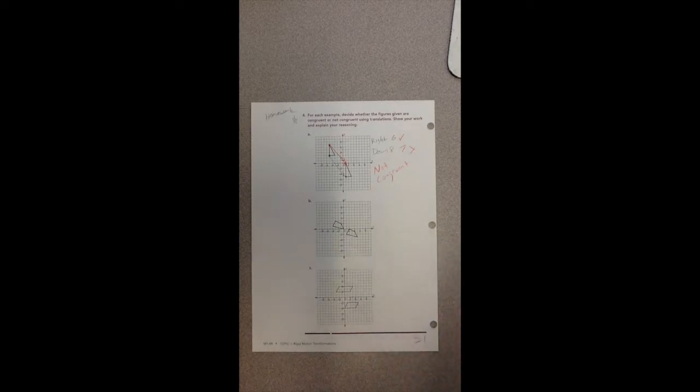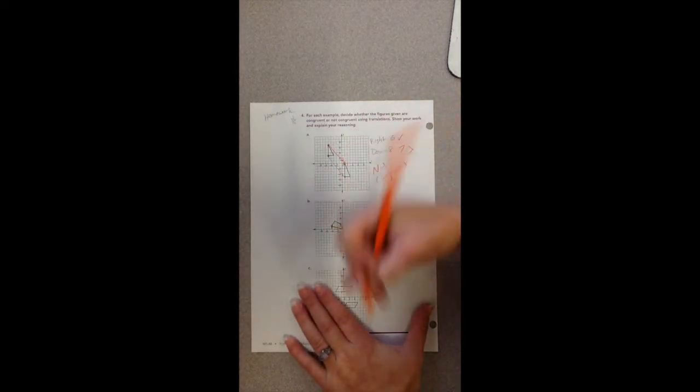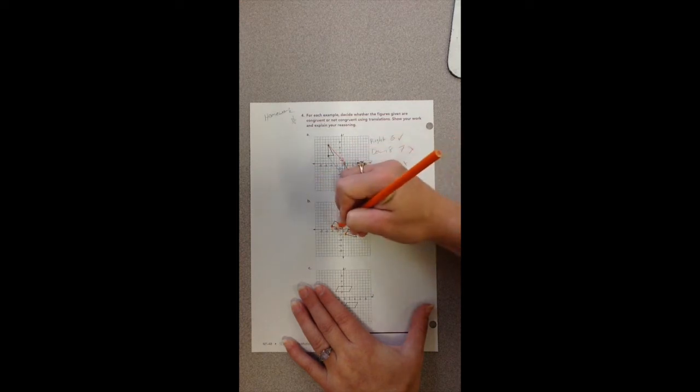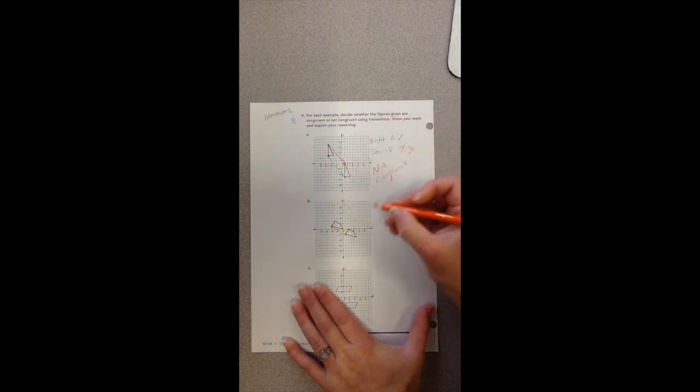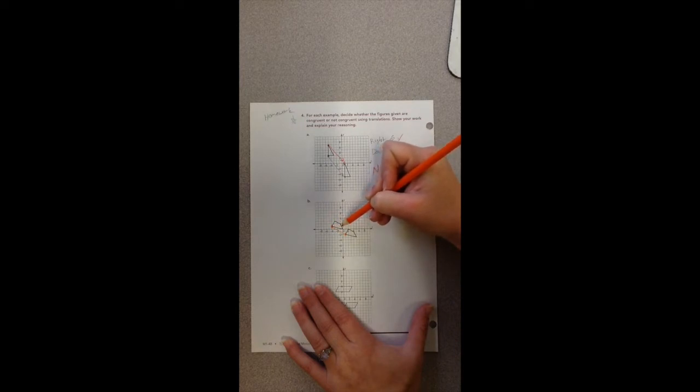Same thing with B. We just need to see if all the points moved in the equal amount. It does look pretty congruent, but let's check some points. So maybe I want to check this point here to this point here. So it looks like it went to the right. Let's see by how much. One, two, three, four, five. It went to the right five and then it went down. Went down one, two, three.